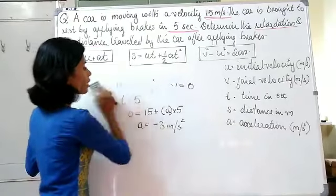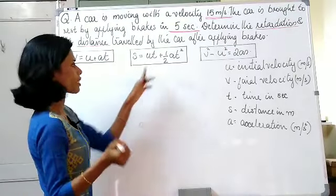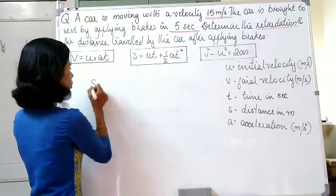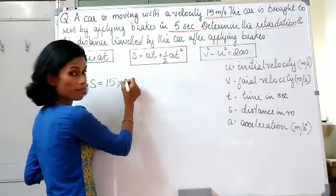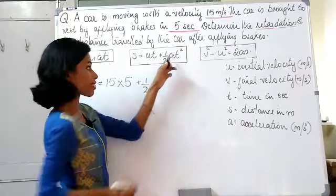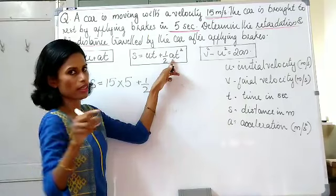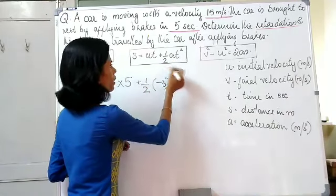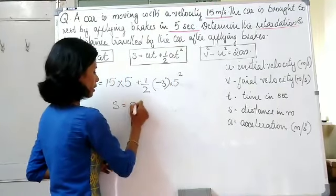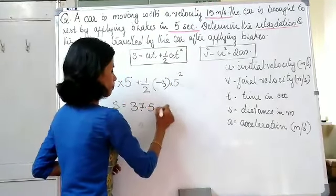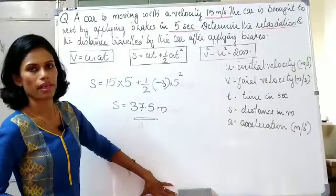For the second part — distance travelled after the brake is applied — we use S = UT + ½AT²: S = 15 × 5 + ½ × (−3) × 5² = 75 − 37.5 = 37.5 meters. So the distance travelled by the car after applying the brake is 37.5 meters.